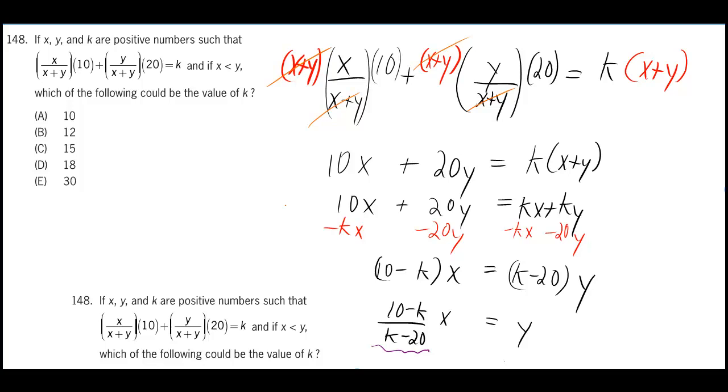If x, y, and k are positive numbers such that [given equation] is equal to k, and if x is less than y, which of the following could be the value of k?